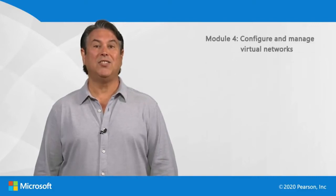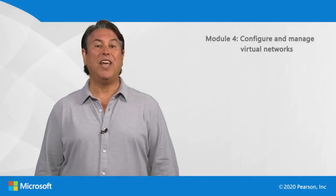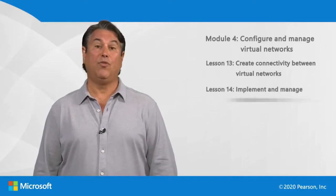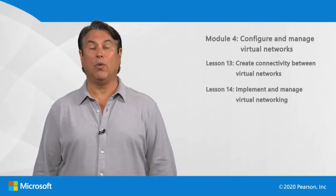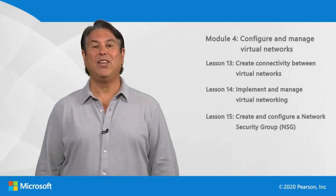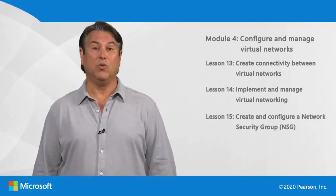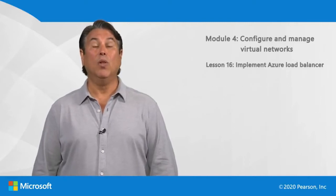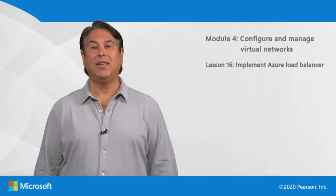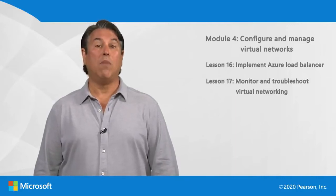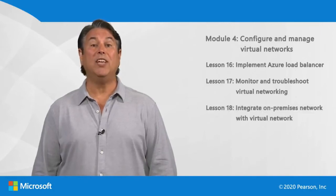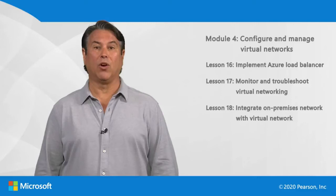Module four has six lessons, and it's all about the virtual networking infrastructure. In lesson 13, we'll create connectivity between virtual networks. In lesson 14, we'll implement and manage virtual networking. Lesson 15 covers creating and configuring network security groups, NSGs. In lesson 16, we'll implement Azure load balancers. Then in lesson 17, we'll monitor and troubleshoot virtual networking. In the last lesson of this module, we'll integrate on-premises networks with virtual networking.